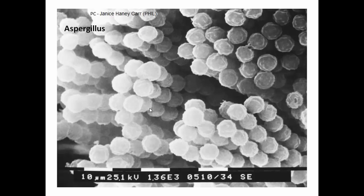This amazing electron microscopy image is of Aspergillus. You can see how beautiful their arrangement is — like a stack of buildings. This is the electron microscope image of Aspergillus. Something clinically relevant: it is found in plants and decaying plant matter, and it can be found in soil.